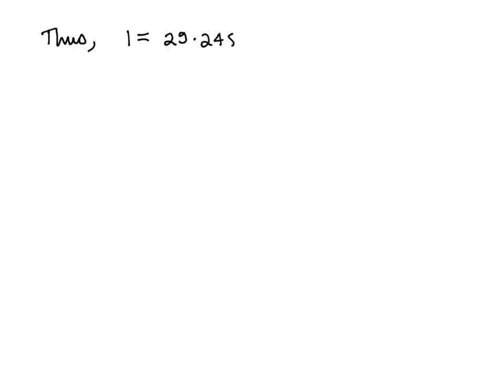So what this does for us is we use our equations from the extended Euclidean algorithm as a kind of ladder to go from the GCD at the bottom and replace successive remainders until we get to our original quotients at the top. We've found that in this case our coefficients are a equals 29 and b equals negative 74. And we're done.